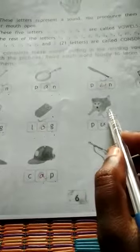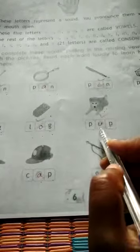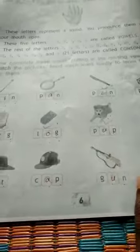Log. L-O-G, log. Pup. P-U-P, pup. Pup means small baby of a dog.